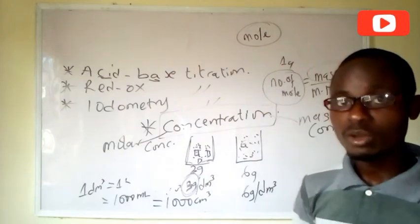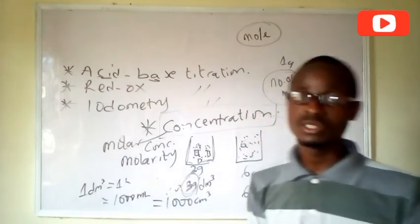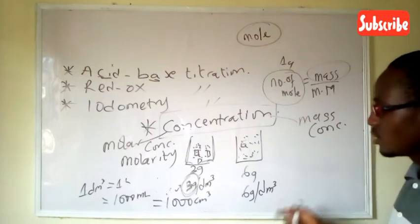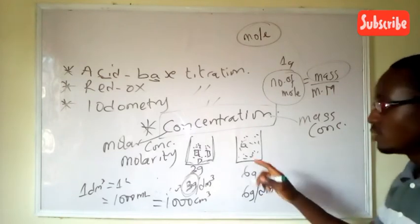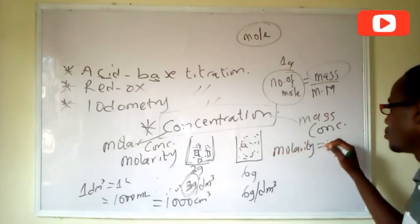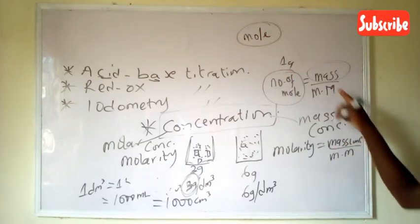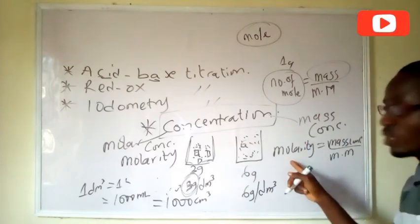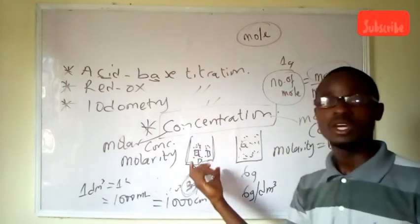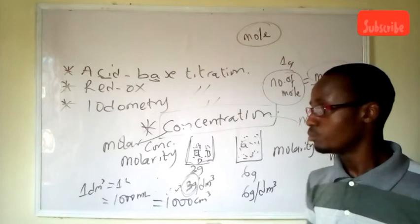Another name for molar concentration is molarity — they can be used interchangeably. This leads us to use of some formulas. Molarity is equal to mass concentration over molar mass, just like number of moles equals mass over molar mass. So if I want to know how many moles I have dissolved in one dm³ of water, I take the three grams over the molar mass of the sugar, and I will be able to get that.